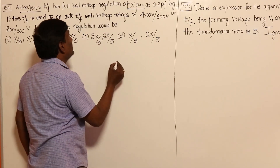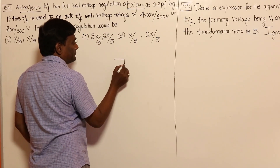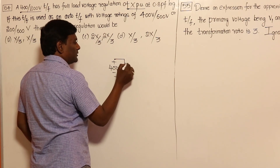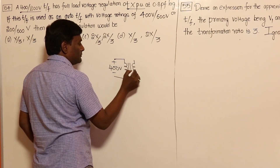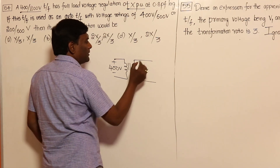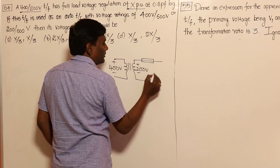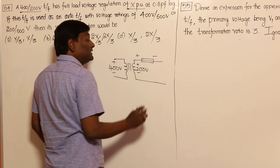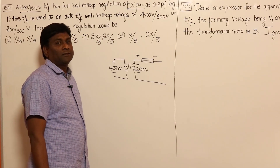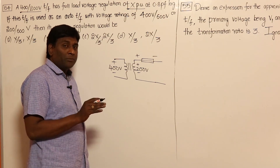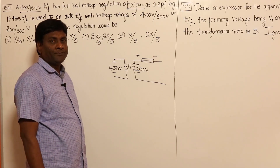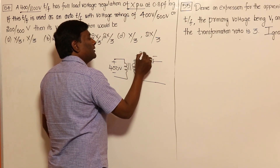For example, if I have a 400 by 200 volts normal two winding transformer — 400 volts on one side, 200 volts on the other side — there will be a series impedance. The voltage drop across the series impedance is the voltage regulation. So how much is the voltage drop? It is going to be 200X.